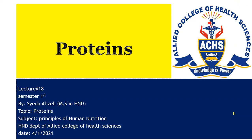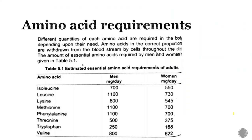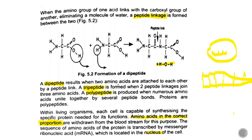To review: amino acids are required in different proportions; every amino acid is different. When two amino acids join via peptide linkage, they form a dipeptide. If three amino acids join, they form a tripeptide. More than three form a polypeptide. Remember that proteins are actually polypeptides.